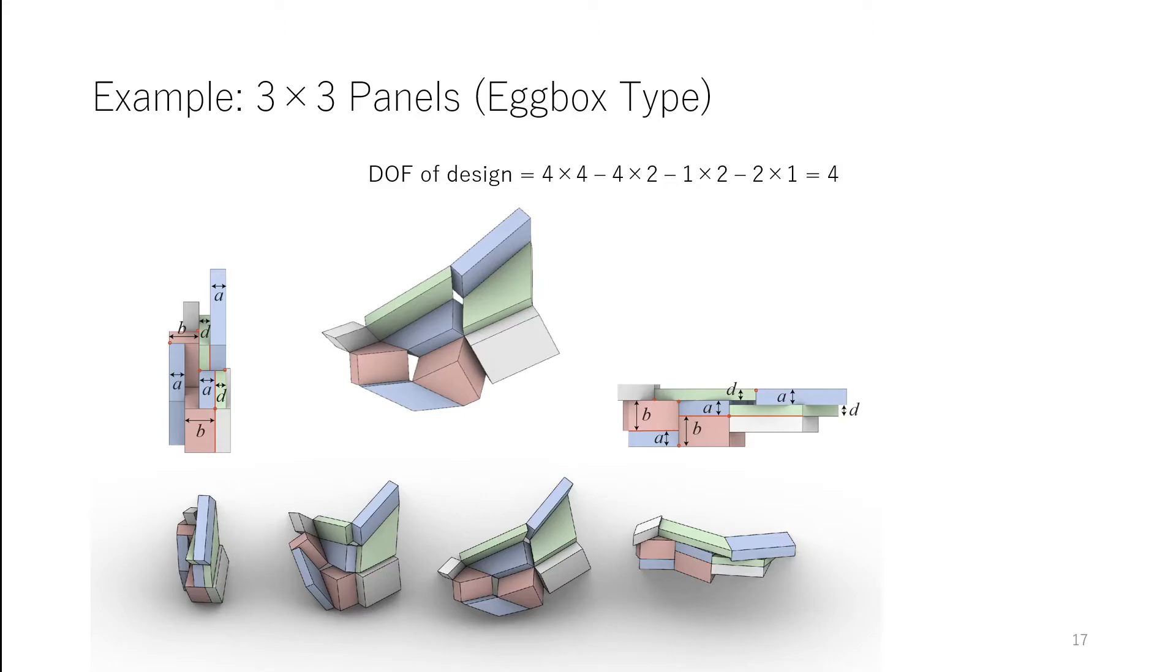For example, when we consider the DOF of design of the mesh with 3x3 quadrangle panels, each of the four interior vertices has four sector angles. Each of the four interior vertices has two constraints. One interior panel has two constraints, and each of the two saddle-like vertex has one constraint. So the DOF of design is four. We can control four parameters and change the form.